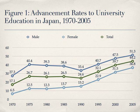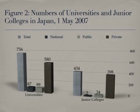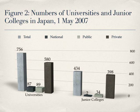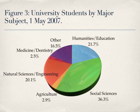The first graph, figure 1, shows advancement rates to universities in the period 1970 to 2005. Using this graph, we will learn how to talk about trends in data over time. The second graph, figure 2, shows the number of universities and junior colleges in Japan. Using this graph, we will learn how to compare two sets of data. The third graph, figure 3, is a pie chart that shows the percentage of university students studying various major subjects. Using this pie chart, we will learn how to discuss percentages.